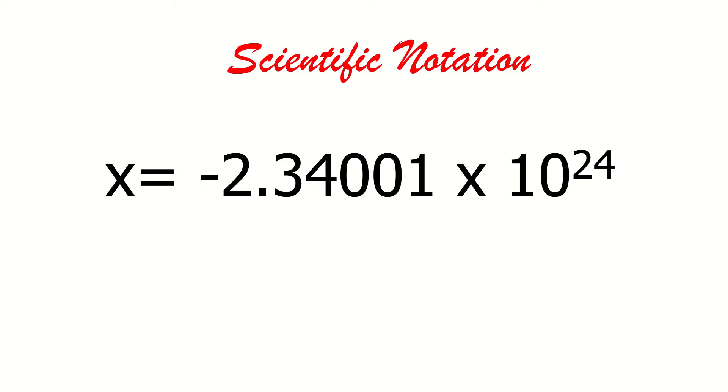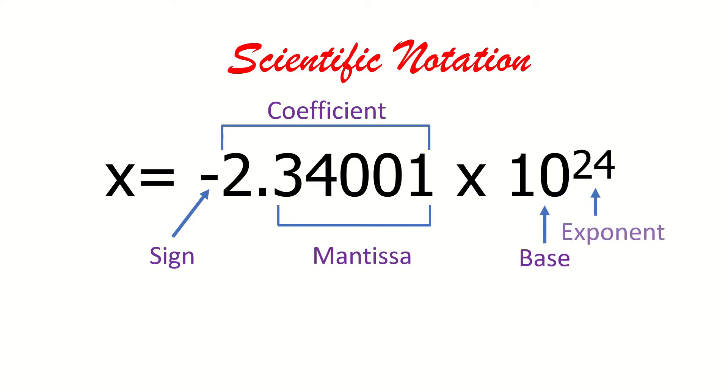Let's look at the format of a scientific notation. This is what you call the sign, the coefficient, and at the right side of your decimal point is the mantissa. This is the base, which is always written as 10, and this is the exponent at the uppercase of your base.